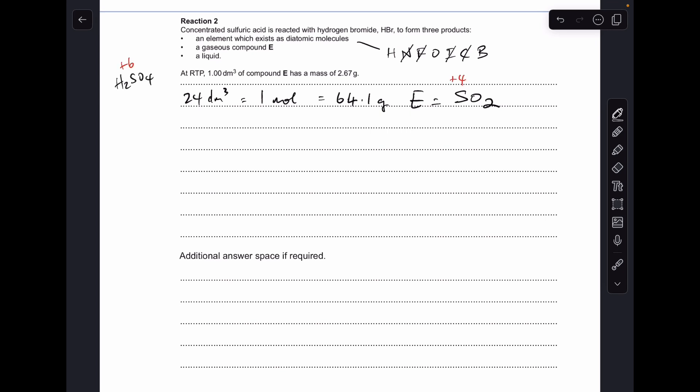And if we think about what's happened to the sulfur, it started out in a plus six oxidation state in sulfuric acid, it's been reduced to plus four in the SO2. So if we've got a reduction happening, we must also have an oxidation. So bromine starts out at minus one in HBr, we've got a diatomic element, so that must be the oxidation process. So this diatomic molecule must be Br2.